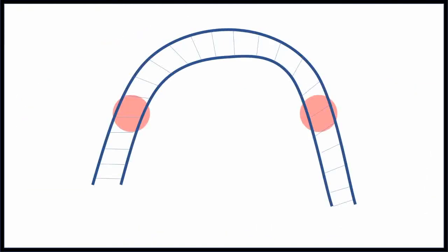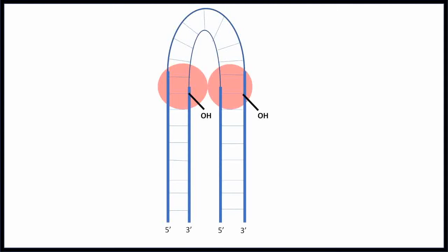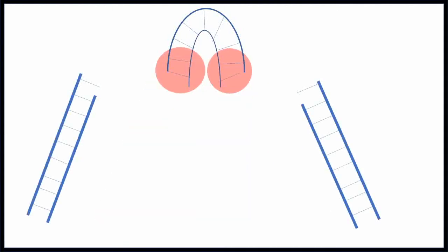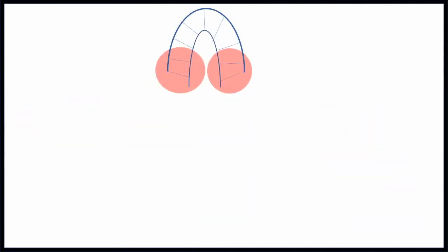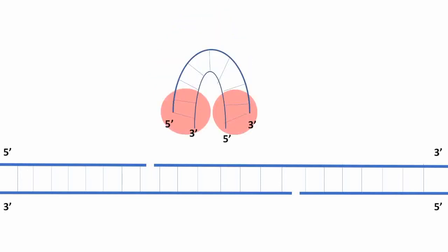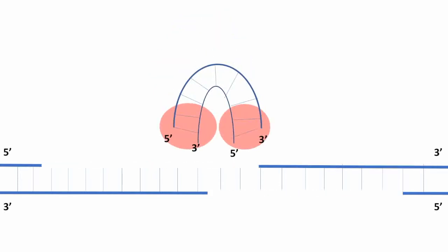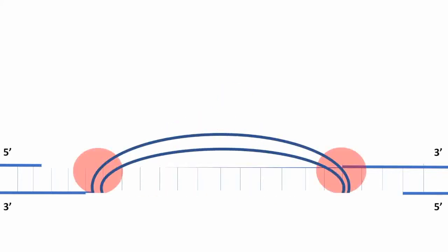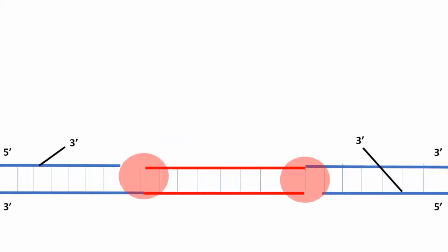Let's zoom in a bit. Each 3'-hydroxyl group attacks the other strand of the double helix to form the hairpin intermediate. The 3'-hydroxyl groups then attack the target DNA to form nicks. DNA polymerase synthesizes across the gaps and DNA ligase seals them.